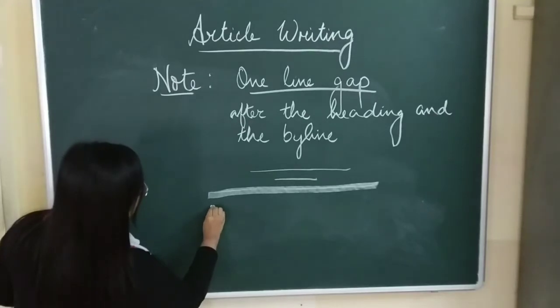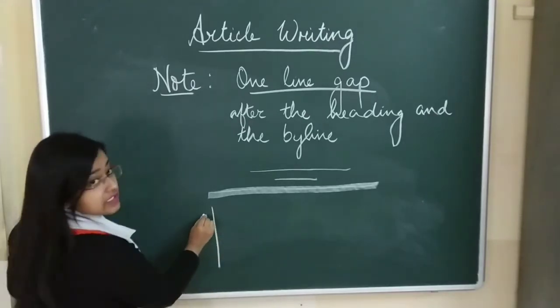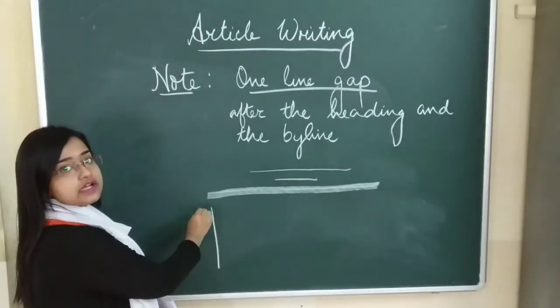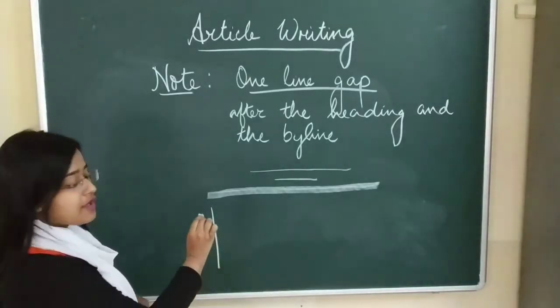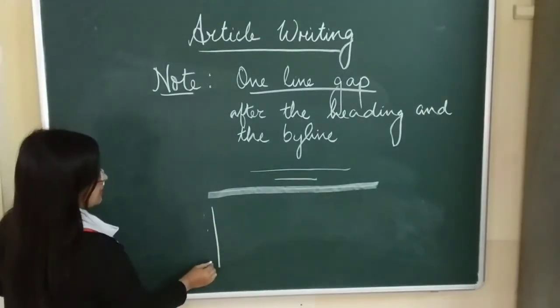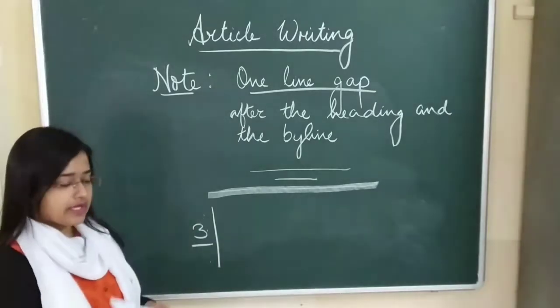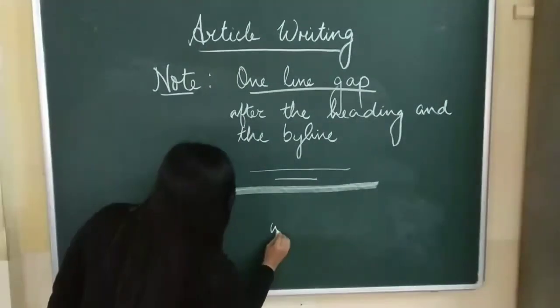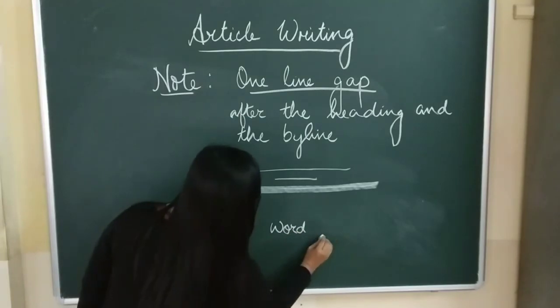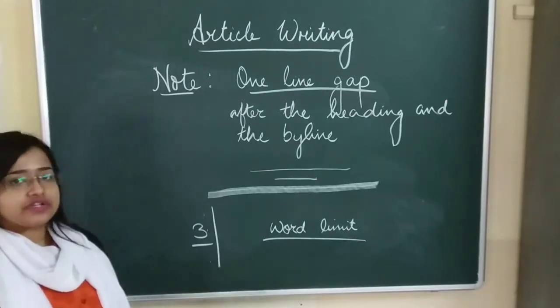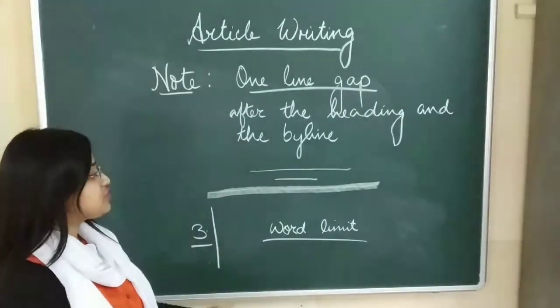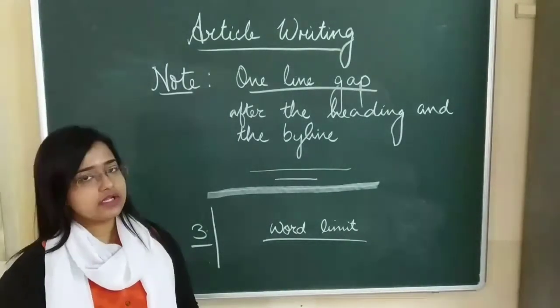One line gap. And then start writing your article from near the margin. It will be divided into three paragraphs. You need to keep your word limit. It will be specified in the question what the word limit is, and you need to be within your word limit.